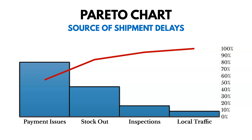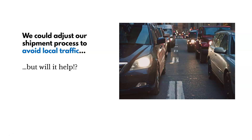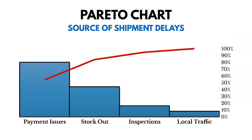It looks like payment issues are the most occurring issue. Now, we could adjust our shipment process to avoid local traffic, but would it help? If we go back to our Pareto chart to look at the sources of those defects, we see that local traffic is really just a small contributor to those shipment delay defects, so it's probably not going to help us that much.